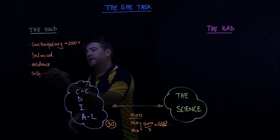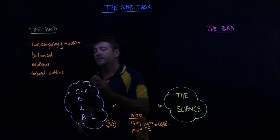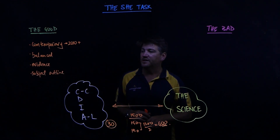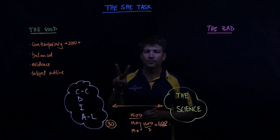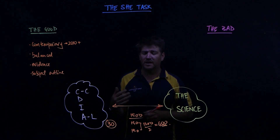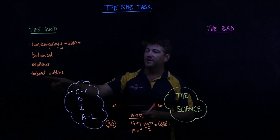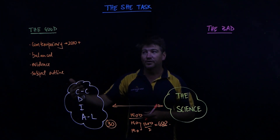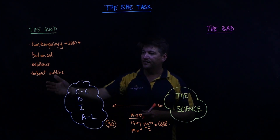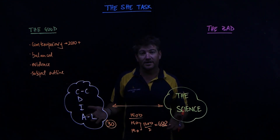It's also linked to your subject outline. If you don't know what that is, go and find it. Your subject outline has two columns — anything in the left-hand side column, any of those dot points, can be an exam question. They can also give you the basis for one of these good, contemporary, balanced, evidence-based Science of Human Endeavour investigations.